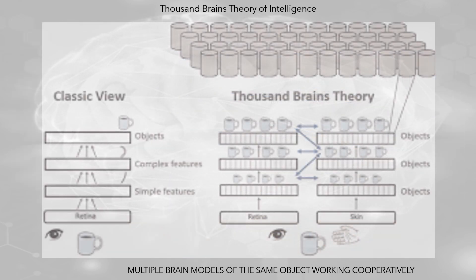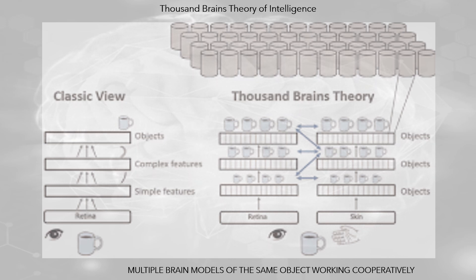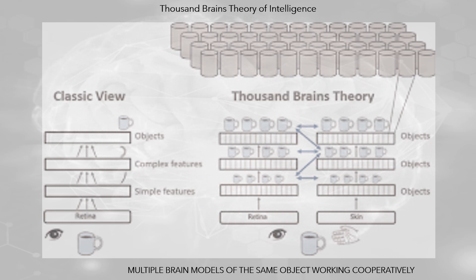The Thousand Brains Theory of Intelligence implies multiple models of an object, where each model depends on a point of view. All models work cooperatively to identify the object or situation. The identification starts from the sampling process and progresses until all the models converge — that is, they agree — and at that moment the object or situation has been identified. The process is done through the flow of information in the neocortical regions.